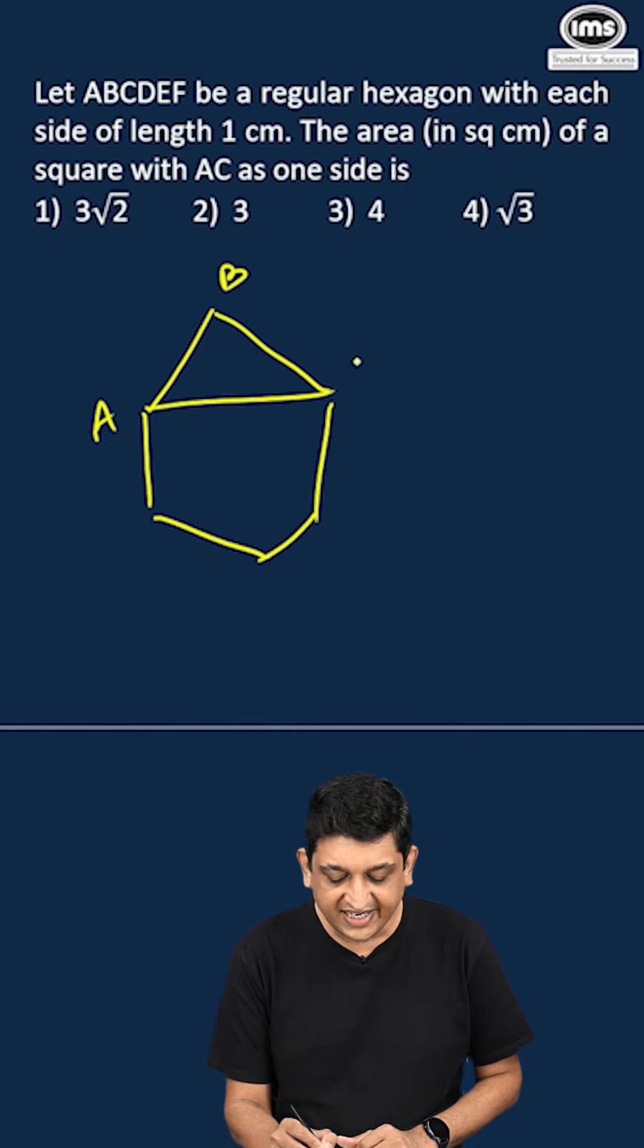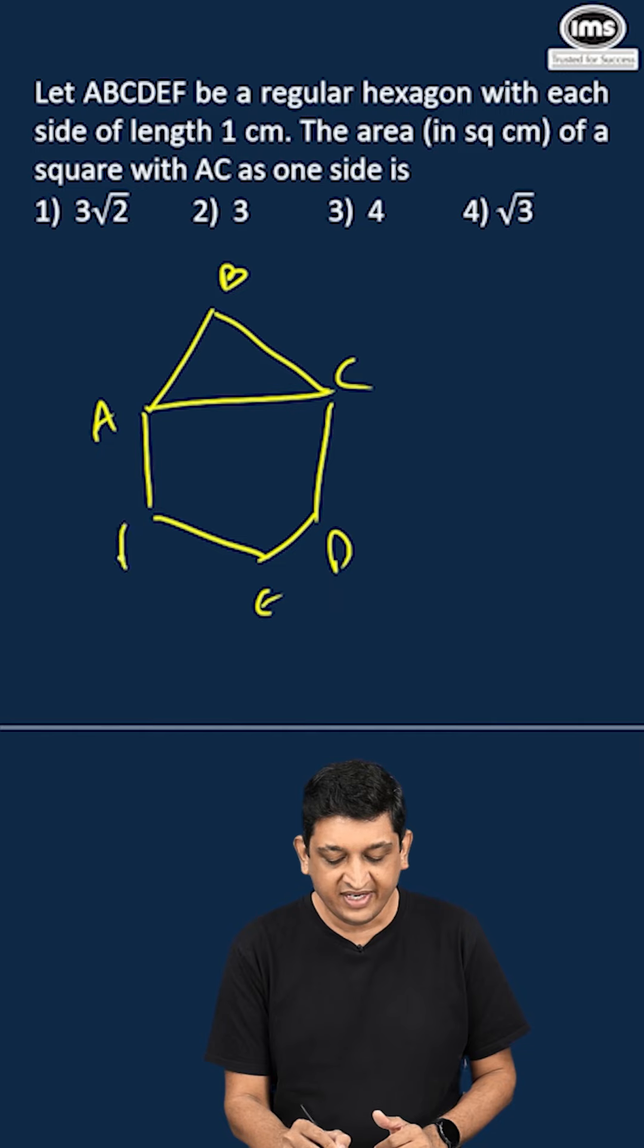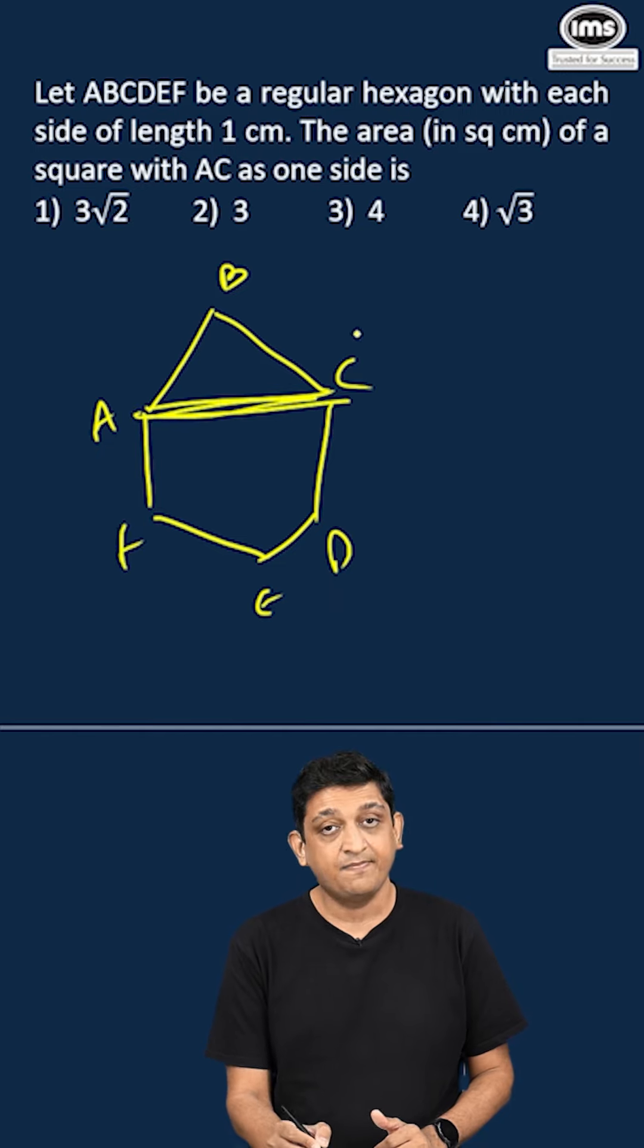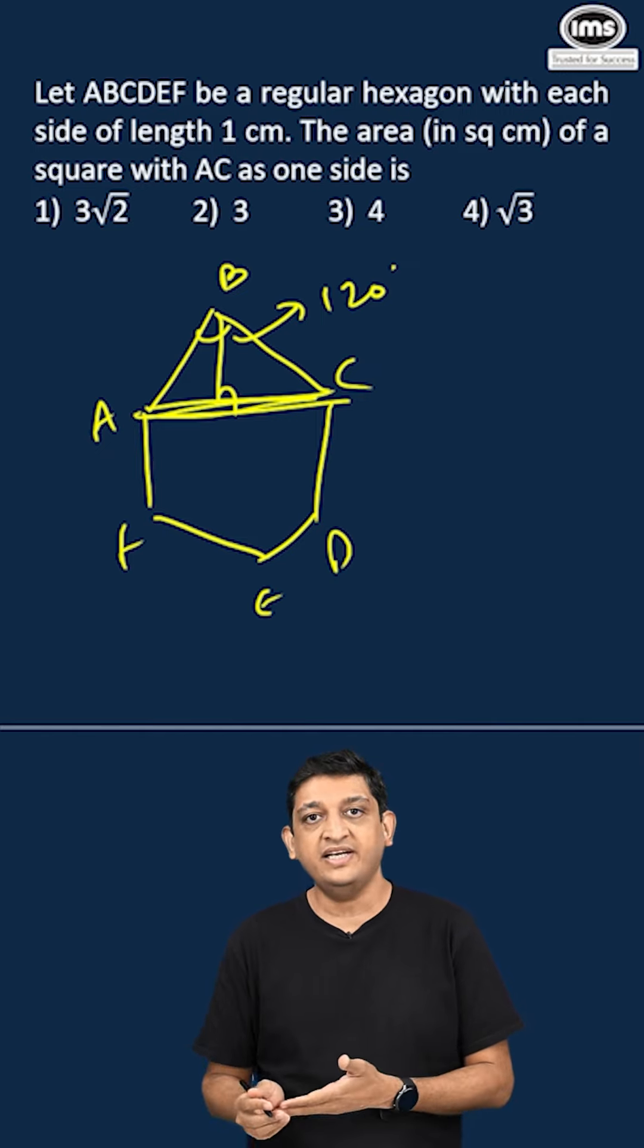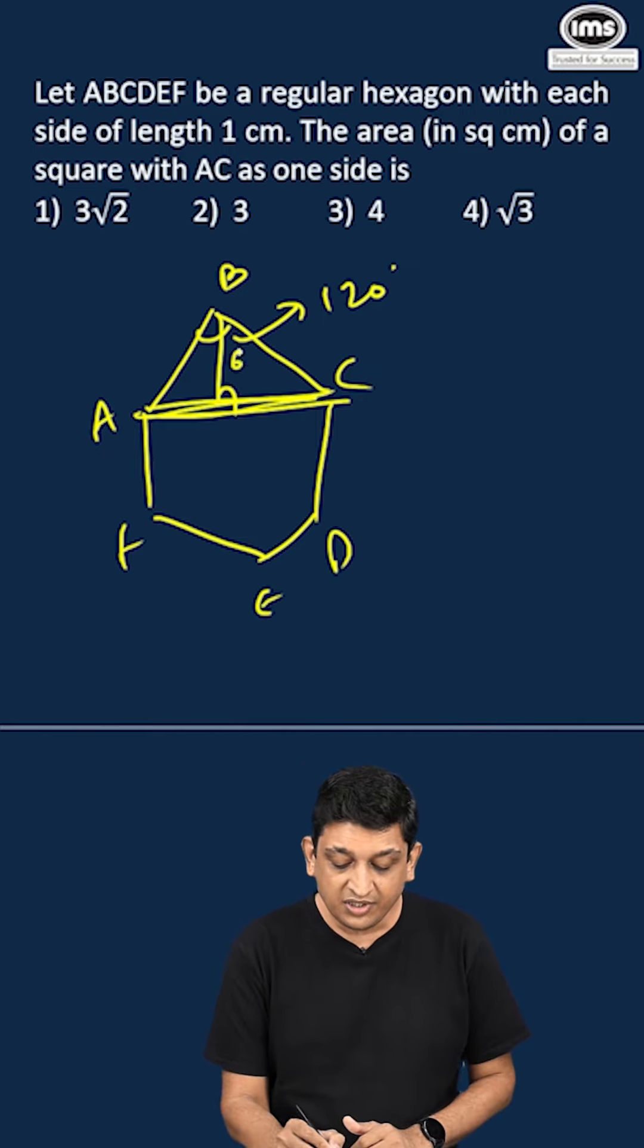ABCDEF will be our hexagon. We have to look at this side. Now this is 120 degrees because the angles of a regular hexagon will all be 120 degrees. Because I am drawing a perpendicular, this becomes 60 degrees.